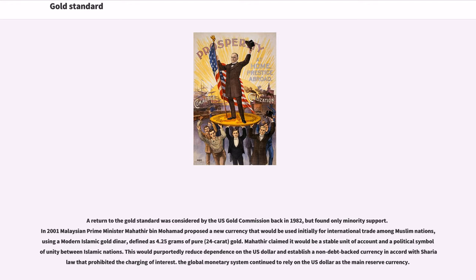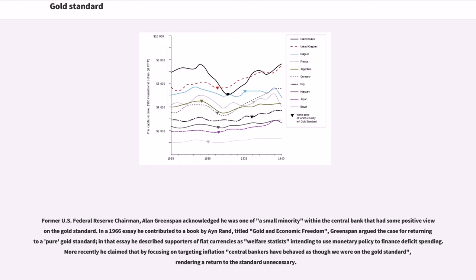The global monetary system continued to rely on the US dollar as the main reserve currency. Former US Federal Reserve Chairman Alan Greenspan acknowledged he was one of a small minority within the central bank that had some positive view of the gold standard. In a 1966 essay he contributed to a book by Ayn Rand titled 'Gold and Economic Freedom,' Greenspan argued the case for returning to a pure gold standard. More recently, he claimed that by focusing on targeting inflation, central bankers have behaved as though we were on the gold standard, rendering a return to the standard unnecessary.